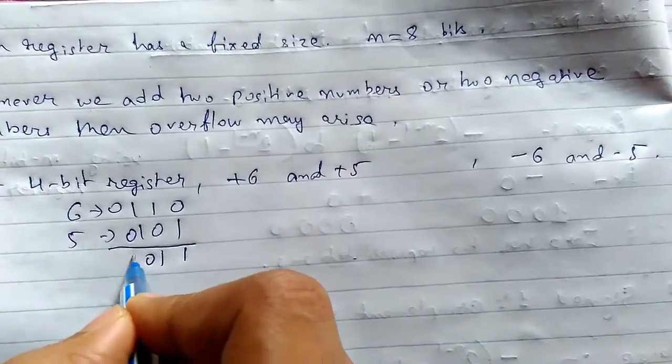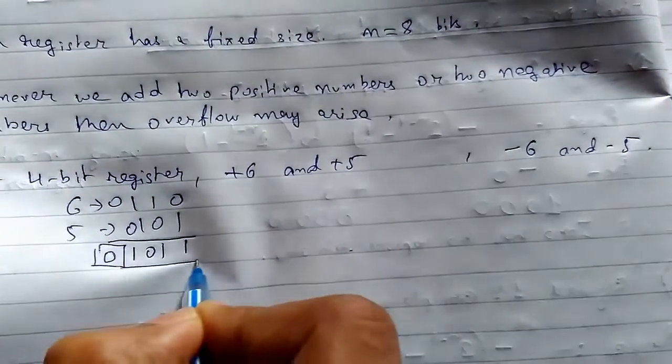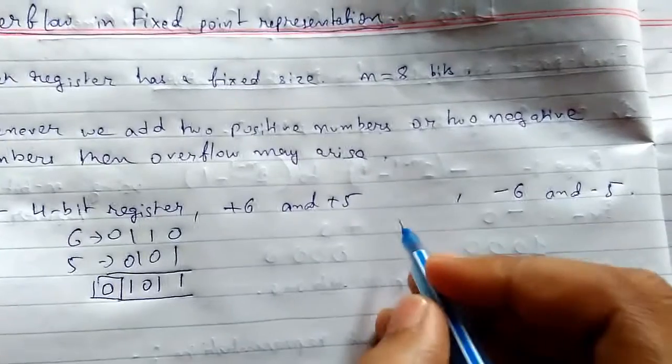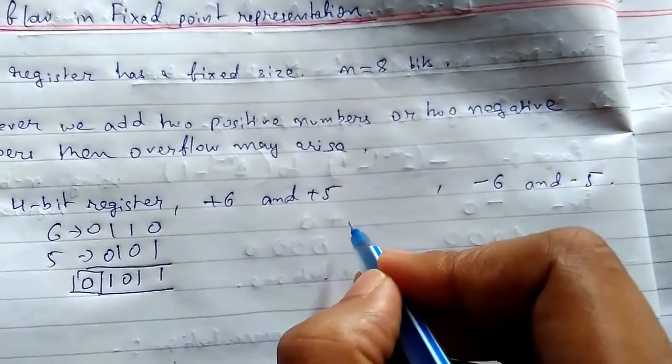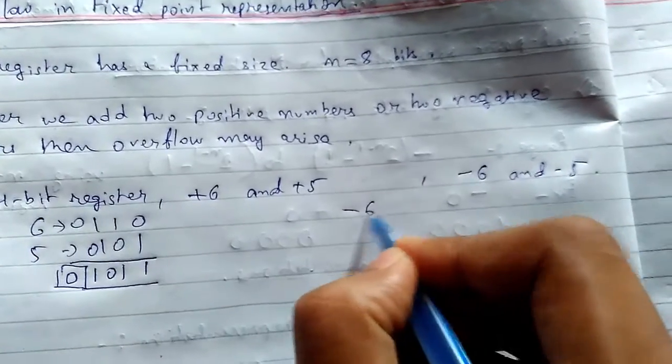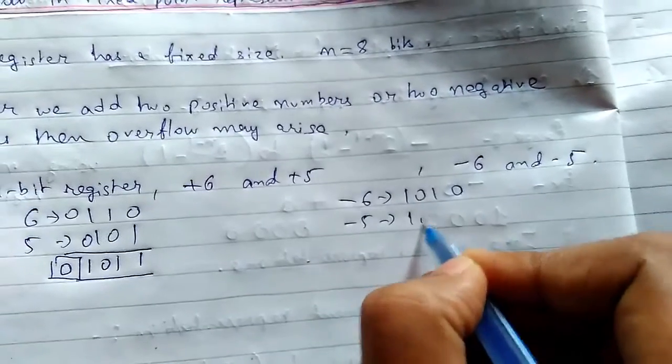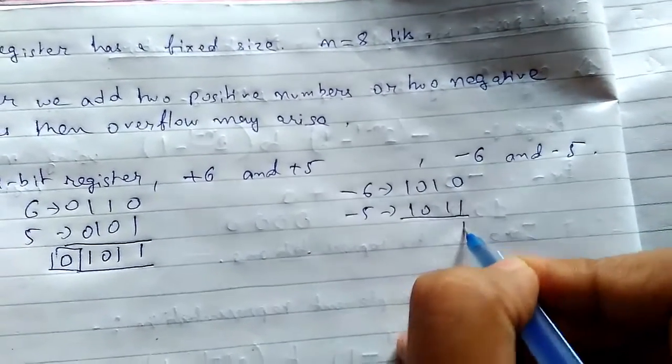For -6 and -5, -6 is 1010 and -5 is 1011. The result is 10101 with an extra carry.